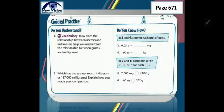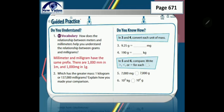Let's answer the guided practice. Number 1: How does the relationship between meters and millimeters help you understand the relationship between grams and milligrams? Millimeter and milligram have the same prefix. There are 1,000 millimeters in 1 meter and 1,000 milligrams in 1 gram.